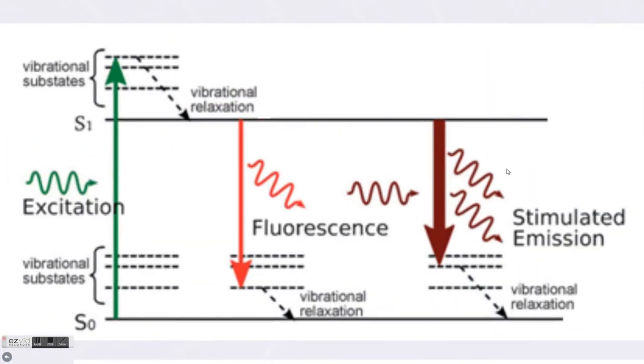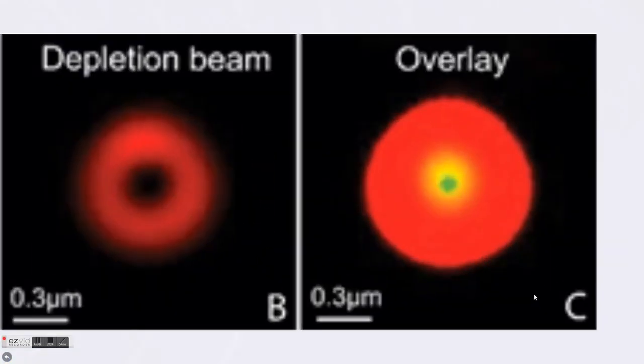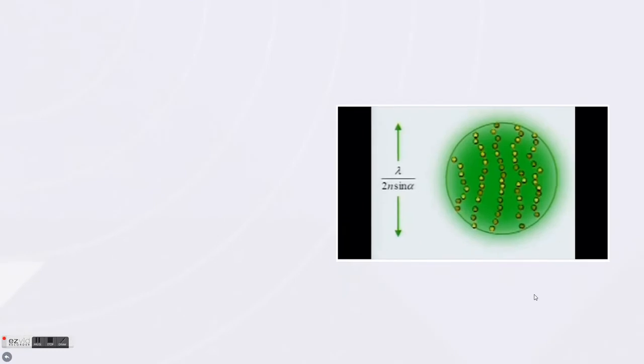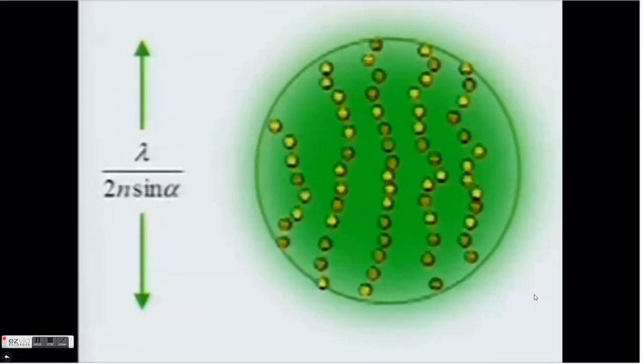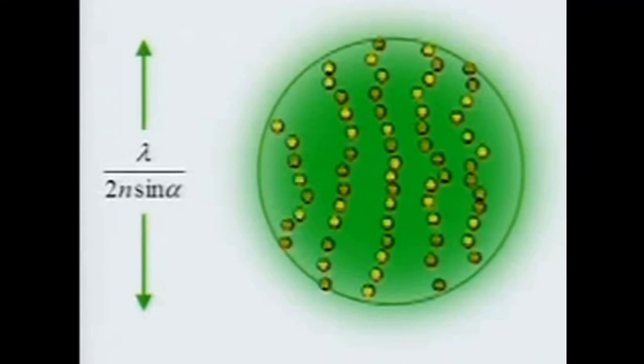In the 2D plane, electrons hit with the second light beam are stimulated to emit energy, thus they don't emit the photon, and the donut shape is actually dark, because electrons don't release photons. When overlaid with the normal beam, this creates a very small area where fluorophores can actually be activated and release photons.